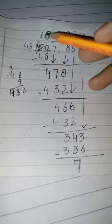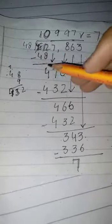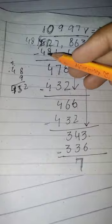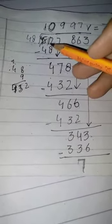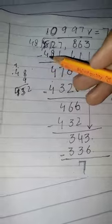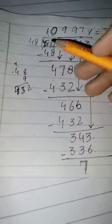48, 1s are 48. Agar hum 48 ko 2 ke table pe karein ge multiply, to is ke liye value hamein zyada chahiye. So hum 48, 1s are 48 hi write karein ge.